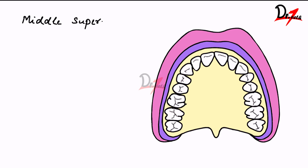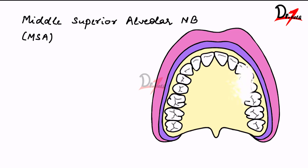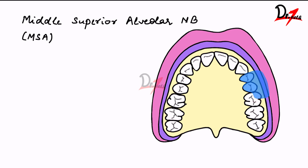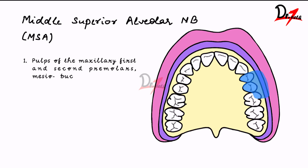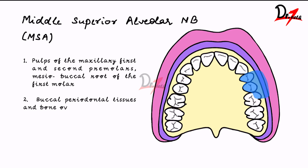That is the middle superior alveolar nerve block, or MSA. It anesthetizes the premolars as well as the mesobuccal root of the first molar and the associated structures, including the buccal periodontal tissues and bone overlying these teeth.